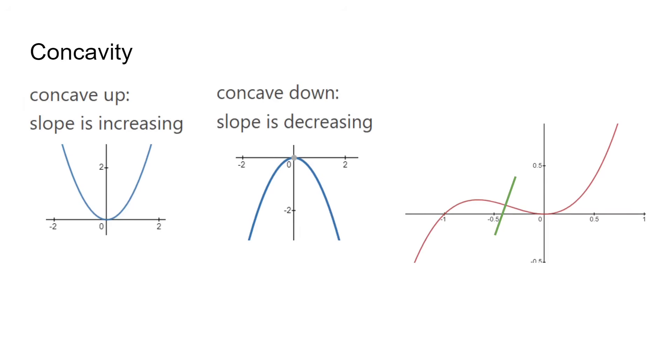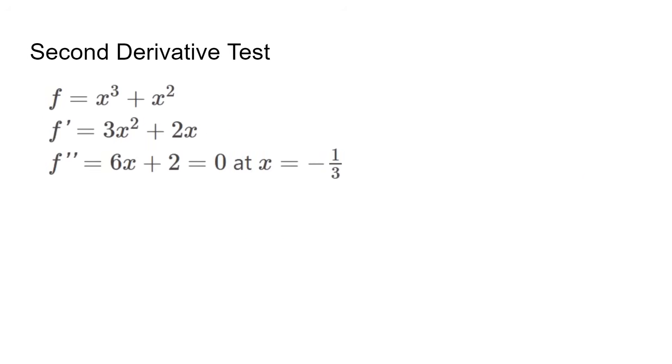We can use the second derivative test to find inflection points, which are where the concavity of a function changes. This is basically the same as the first derivative test, but we use the second derivative. It equals 0 at negative 1 third and we plot it again. Test values on both sides, and because it changes from negative to positive, there's an inflection point at x equals negative 1 third. If the concavity doesn't change, then there is not a point of inflection.